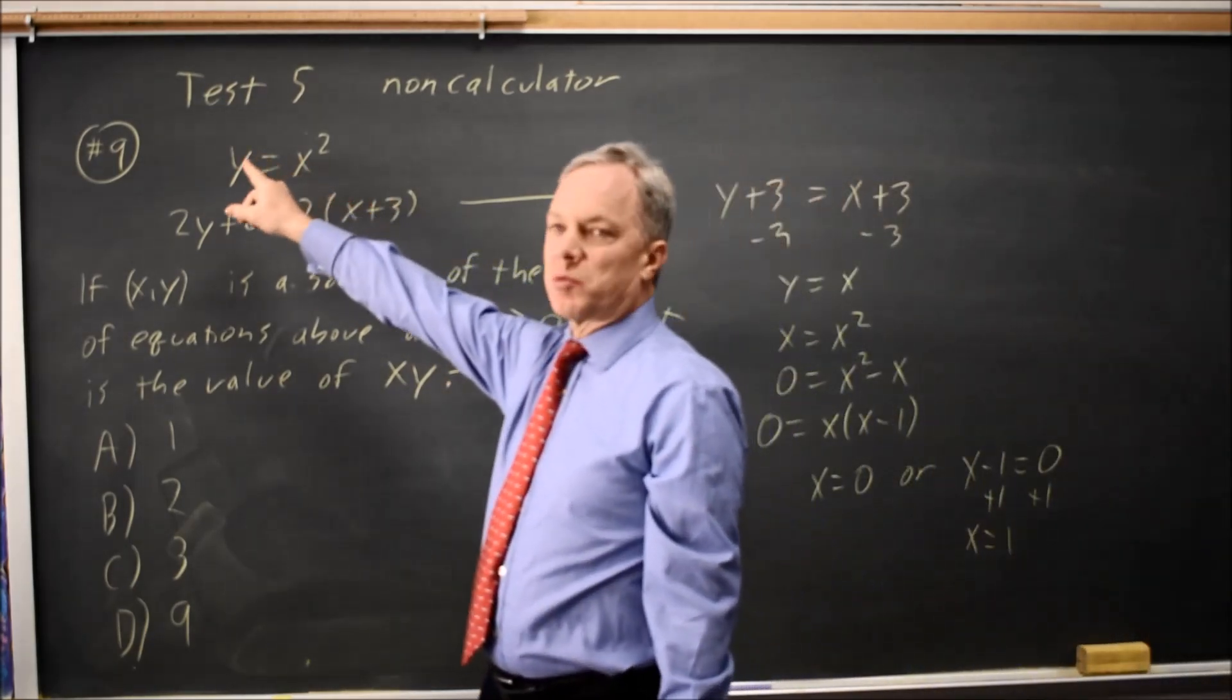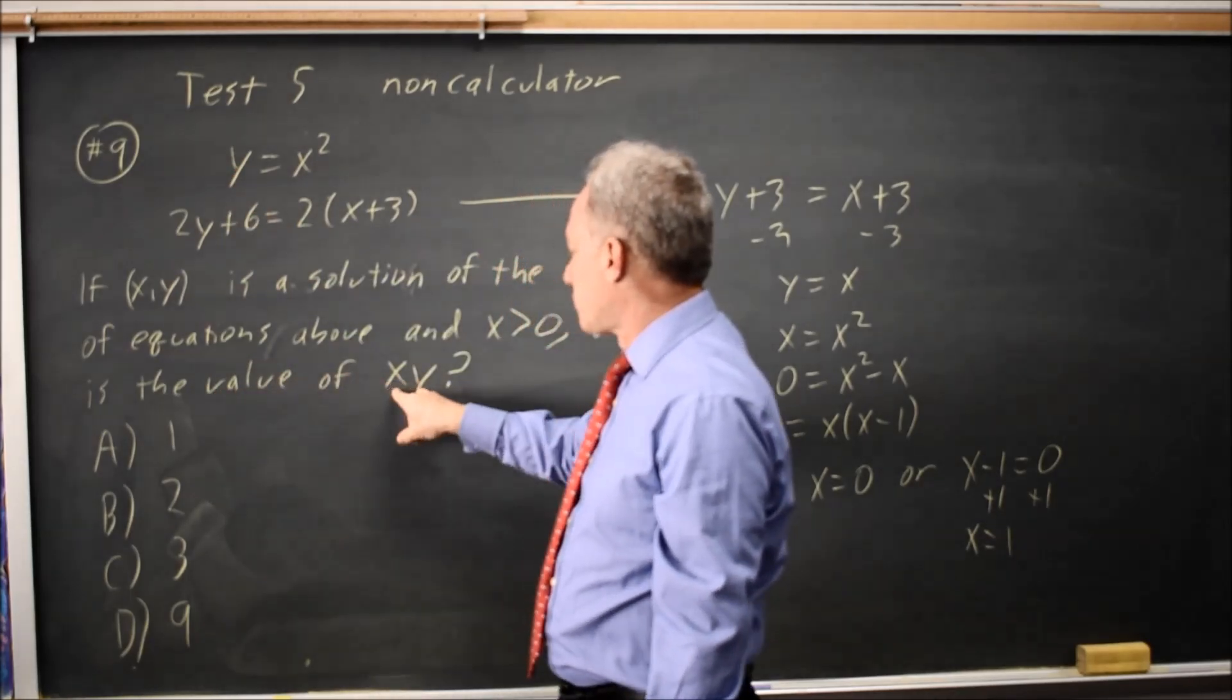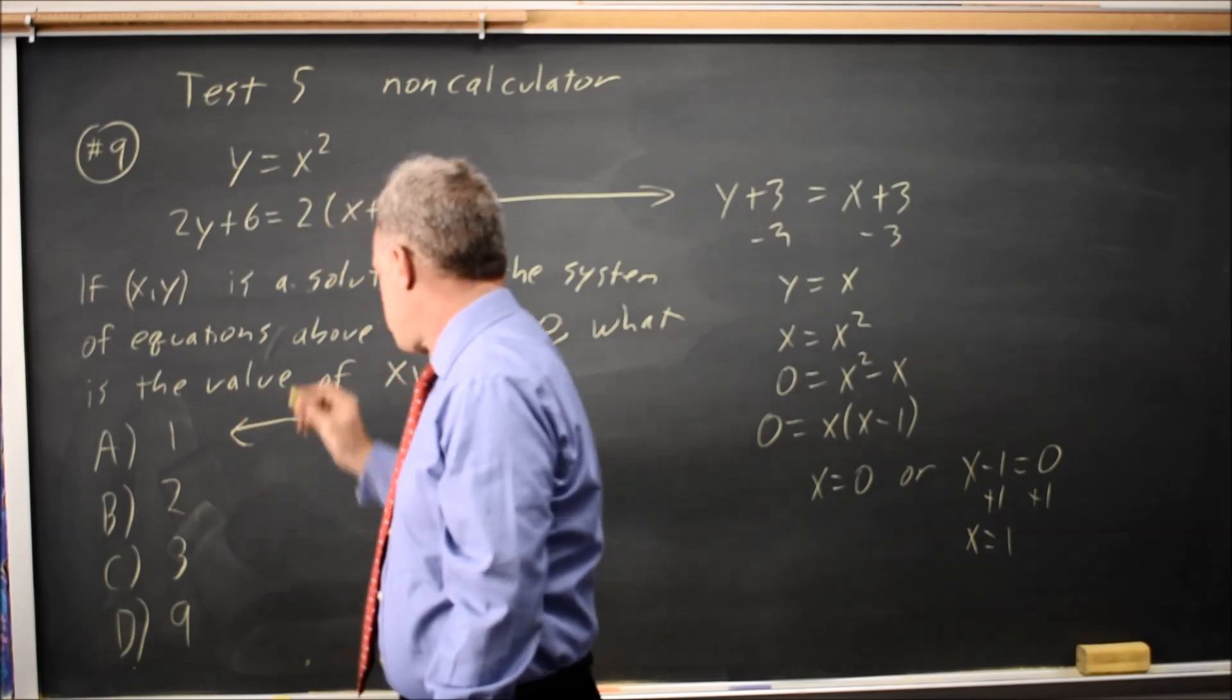If x equals 1 and y is x squared, then y is also 1. They're asking for the product xy, which is 1 times 1 equals 1. The answer is choice A.